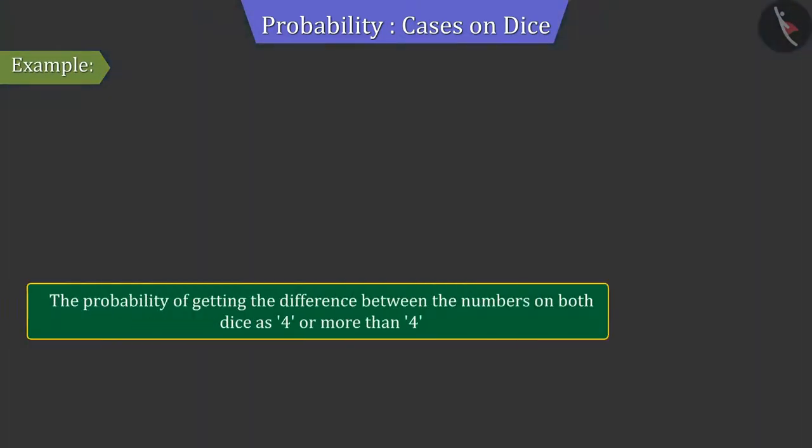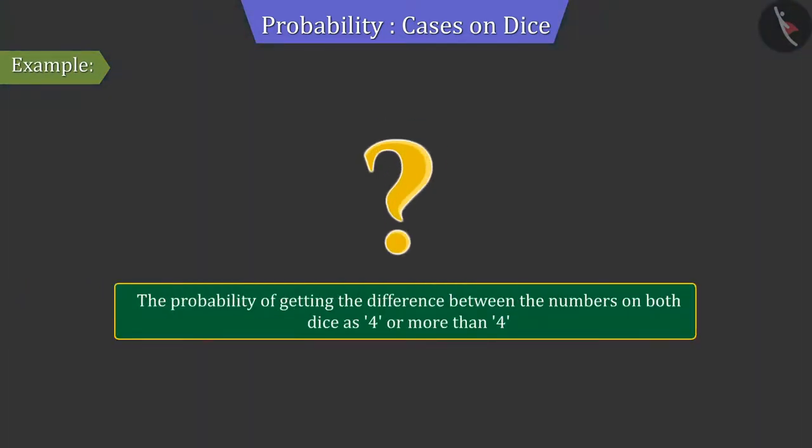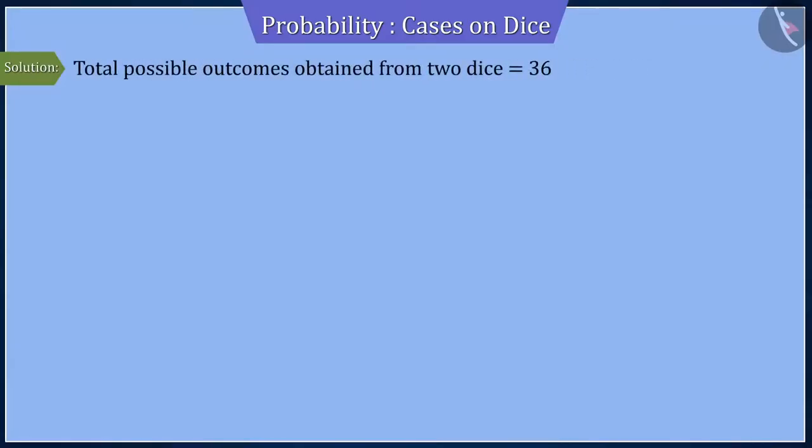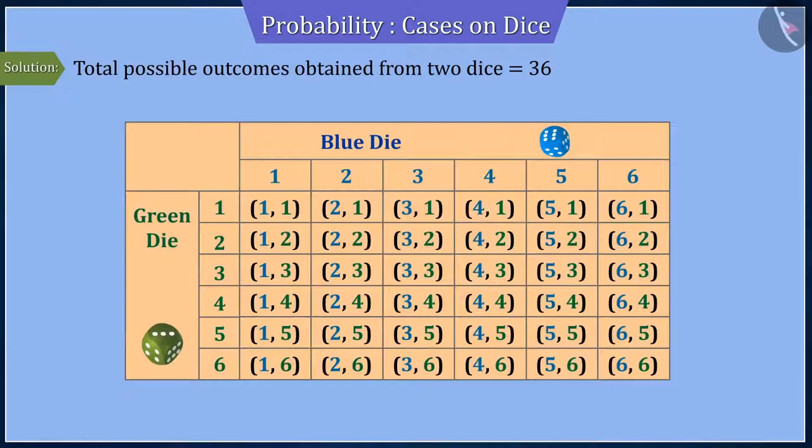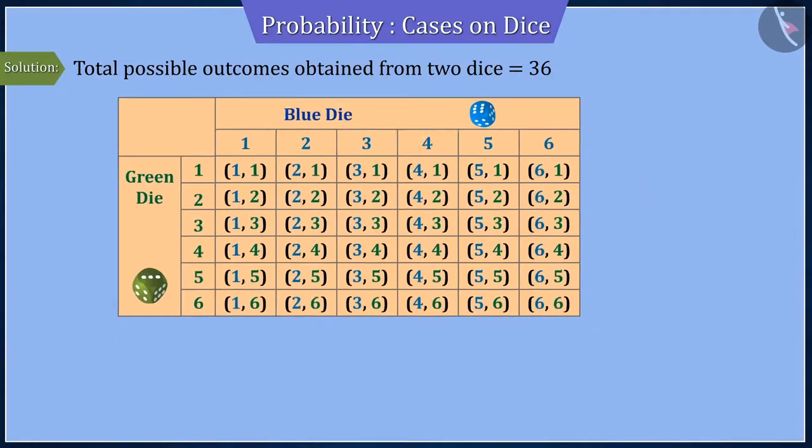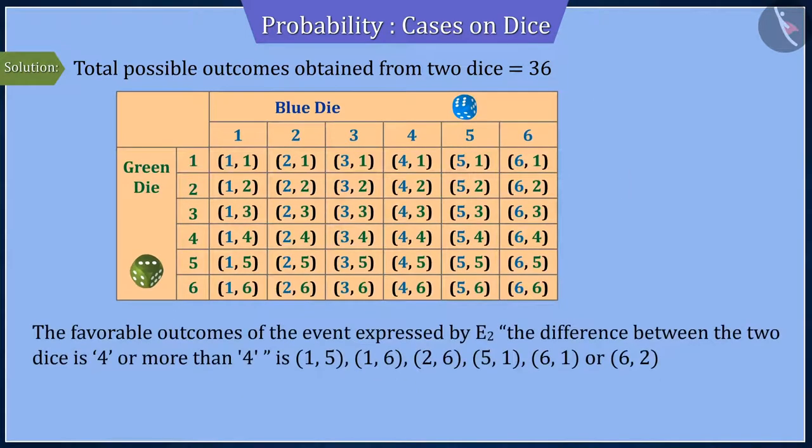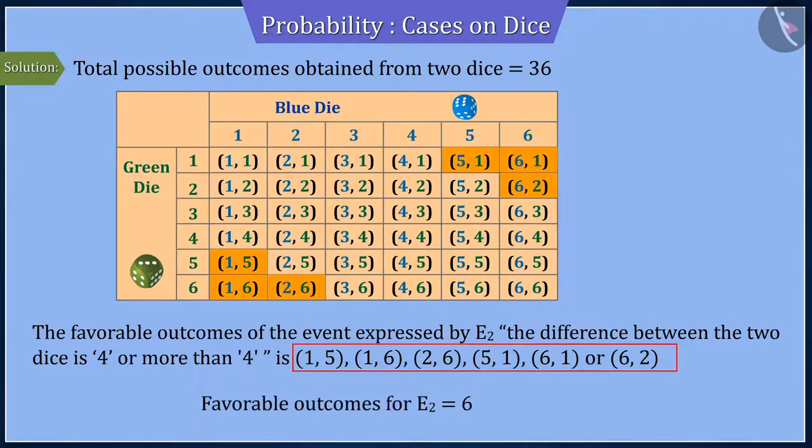Can you find the probability that the difference between the numbers on both dice is at least 4 or more? Let's look at the outcomes obtained from both dice. Here, there are 6 total outcomes favourable to the event E2.